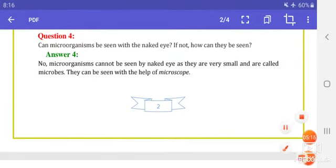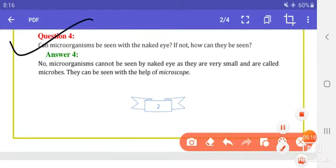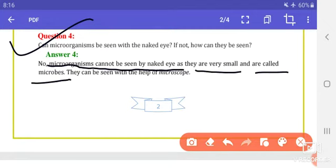Question 4: Can microorganisms be seen with the naked eye? If not, how can they be seen? Answer: No, microorganisms cannot be seen by naked eye as they are very small and are called microbes. They can be seen with the help of microscope.